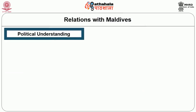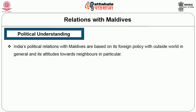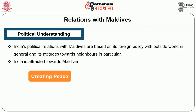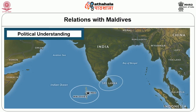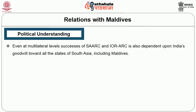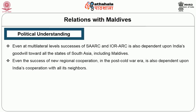Political Understanding. India's political relations with Maldives are based on its foreign policy towards the outside world in general and its attitude towards neighbours in particular. India is attracted towards Maldives for creating peace, stability and security in this region. Geographically, Maldives is so close to India that whatever happens may have a spill-over impact. Happenings in Malé have serious bilateral, sub-regional and regional security implications for New Delhi. Even the success of SAARC and the Indian Ocean Rim and new regional cooperation in the post-Cold War era is dependent upon India's cooperation with all its neighbours.